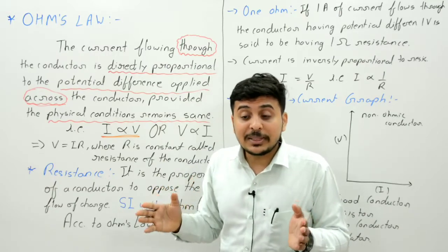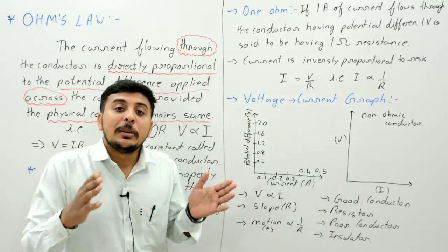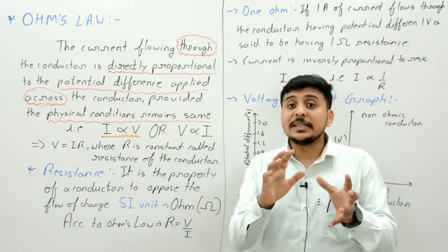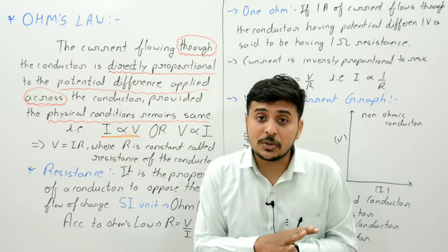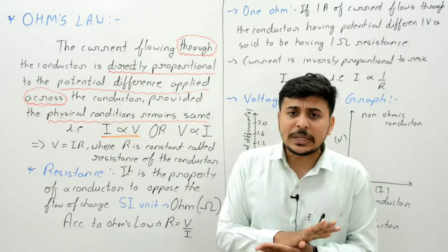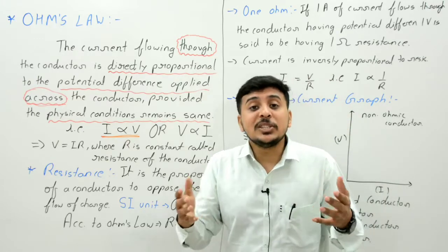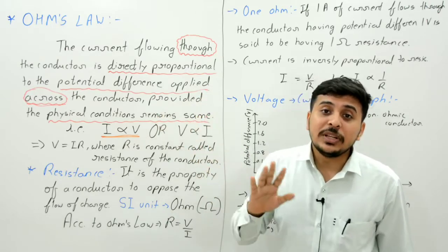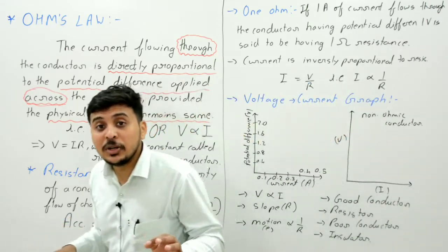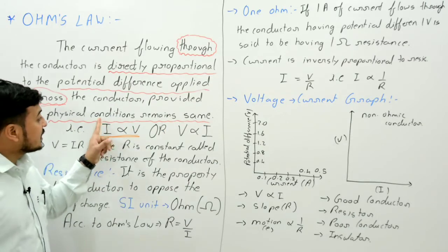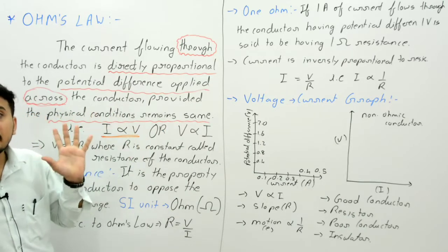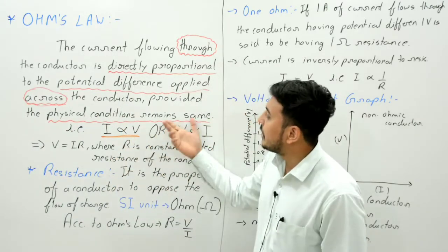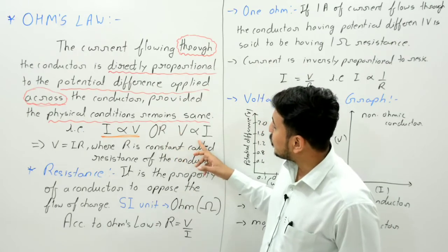The physical conditions should remain constant. The physical conditions are: temperature, pressure, length of the conductor, width of the conductor — all these physical things like temperature and pressure should remain constant, with no change.